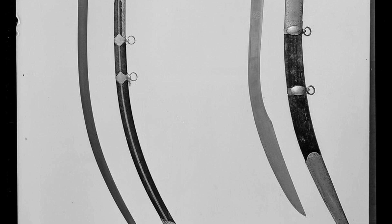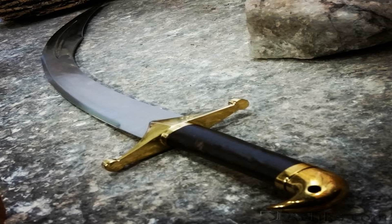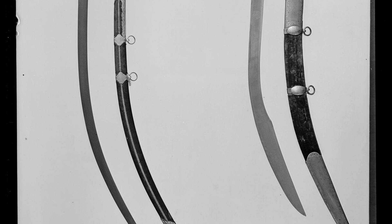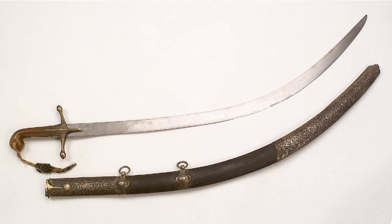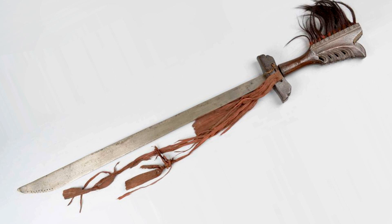The term 'scimitar' has been used across different cultures and regions to describe various types of curved swords. In the Middle East and Central Asia, it was a popular weapon for mounted warriors, known for its distinctive curved blade and efficient slicing action. In India and Pakistan, curved swords such as the Talwar and Shamshir were commonly referred to as scimitars, though they often differed in blade curvature and shape. In Europe, swords such as the sabre and falcata were also sometimes called scimitars, though designed for different purposes. Despite these differences, the term has endured as a recognizable way to describe this class of curved swords.